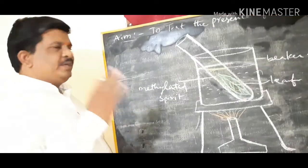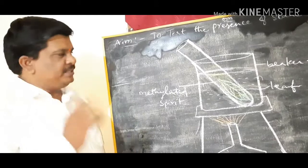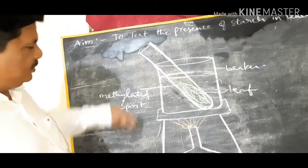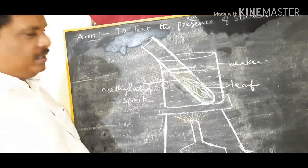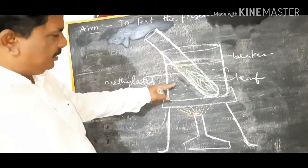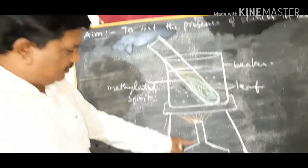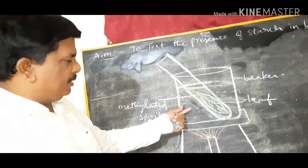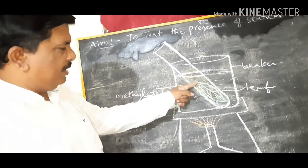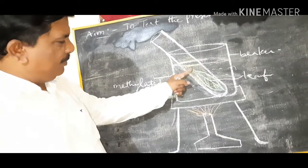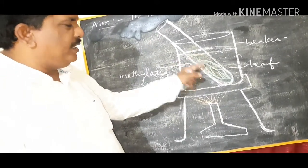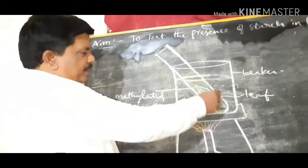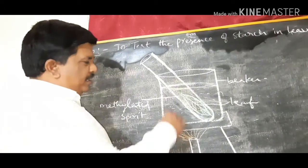Once again, we place the leaf in the test tube which contains methylated spirit. We keep this test tube in the beaker which contains water. Due to this boiling, the water gets boiled, the test tube gets boiled, and the alcohol gets boiled. Immediately, the boiled alcohol bleaches the color of the leaf and it turns pale.